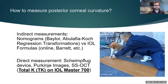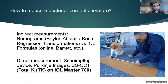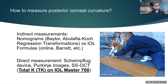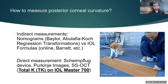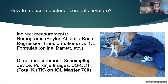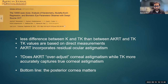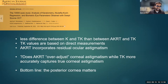The posterior corneal power does matter. We can use indirect measurements such as nomograms, the Abulafia-Koch regression transformations, or let the IOL formula do the work. Or we can try to directly measure the posterior cornea with Scheimpflug devices. One of the new developments over the past three years has been the introduction of the TK on the IOL Master 700. We recently published a paper looking at K versus TK in over 10,000 eyes. TK more accurately captures the true corneal astigmatism compared to regression transformations, which may over-adjust.